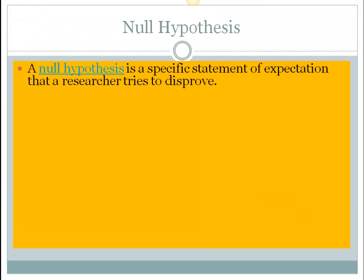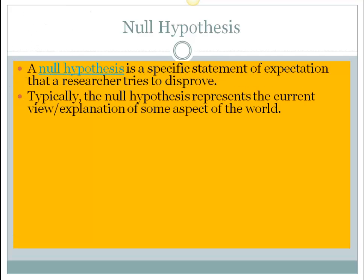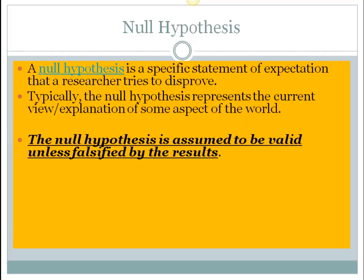The null hypothesis is a specific statement that the researcher tries to disprove. In a null hypothesis, we state what most people typically expect — the current view of how variables affect each other that hasn't yet been disproved. The null hypothesis is always assumed to be valid unless we can reject or falsify it through research. It's very important that you don't use the terms 'prove' or 'disprove' — replace those with 'support' or 'fail to support.' We are not going to disprove anything in psychology.